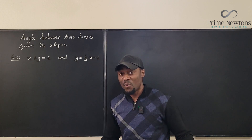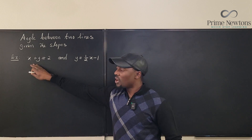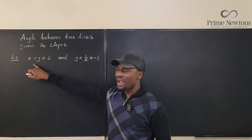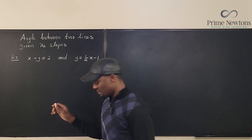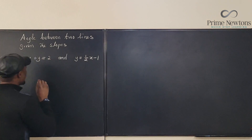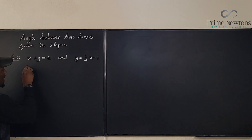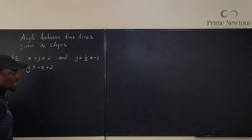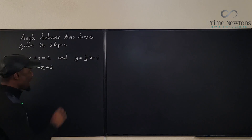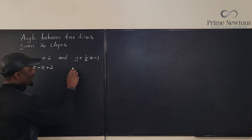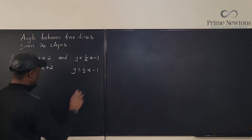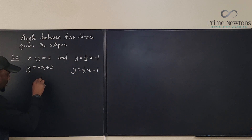Let's start fresh, assuming you don't know anything about what to do but you know how to plot the graphs of these functions. Let's try to write them in slope-intercept form. If we isolate y, we get y = −x + 2. And we also have y = (1/2)x − 1. So let's try to sketch both of these functions.